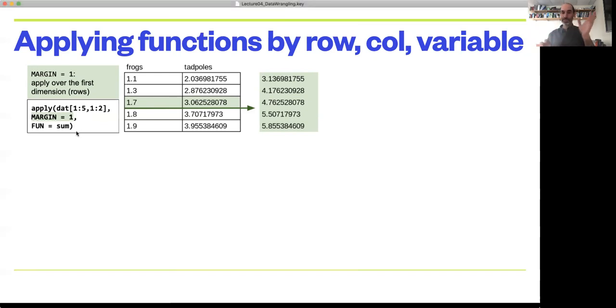You remember that we could use square brackets, something comma something. The first dimension is rows, the second dimension is columns.